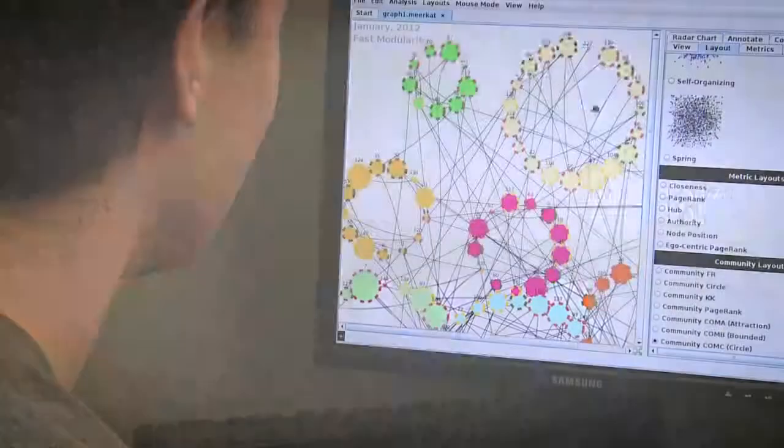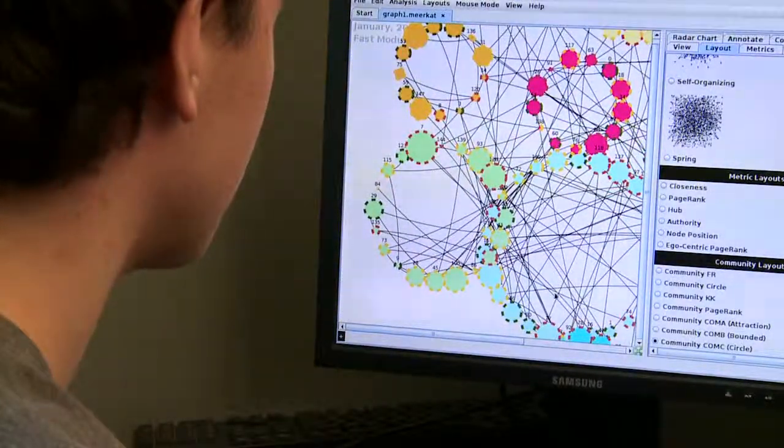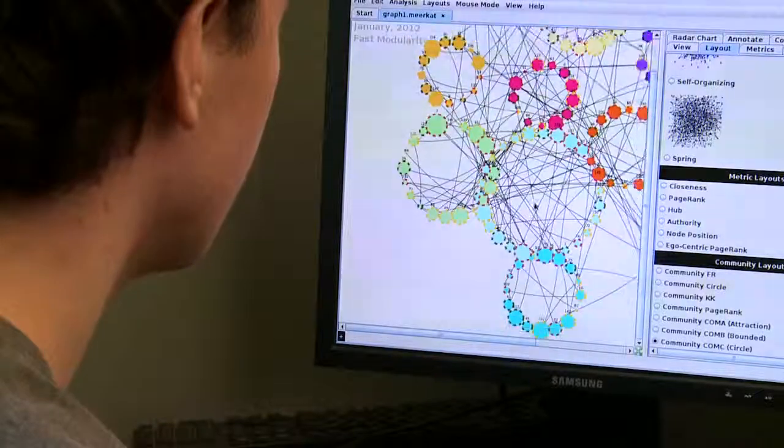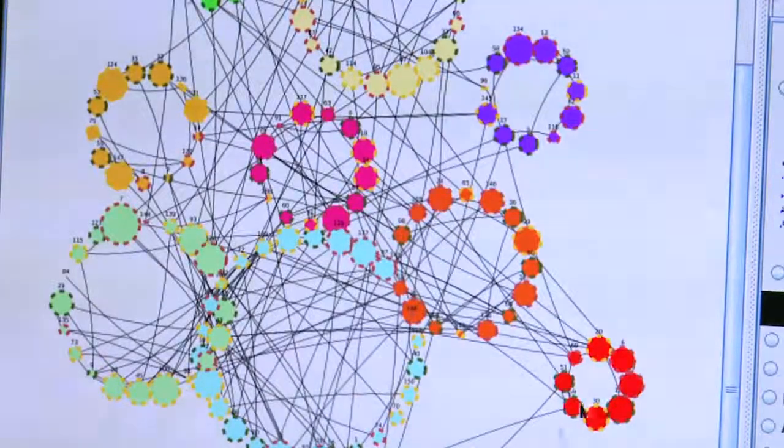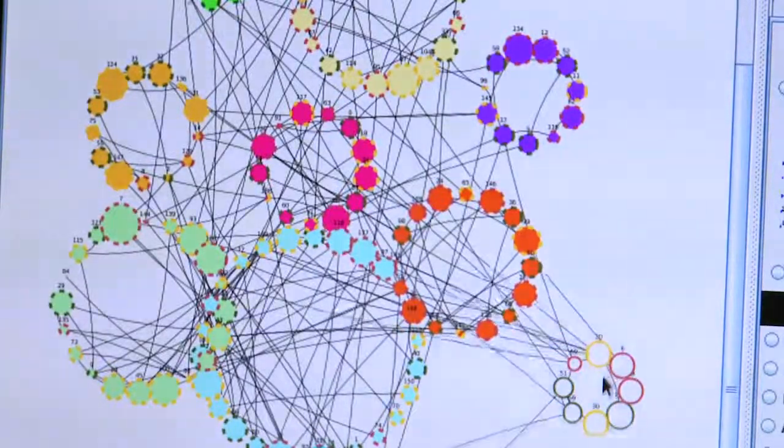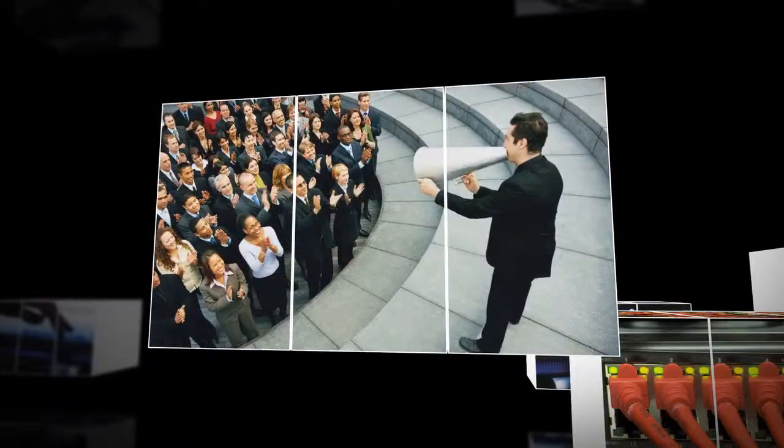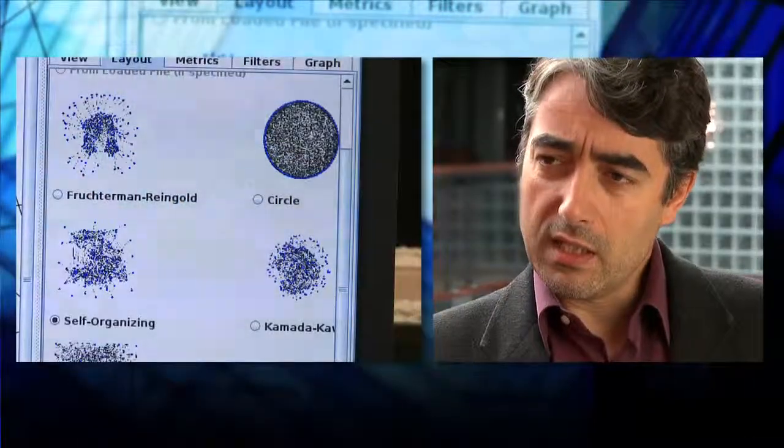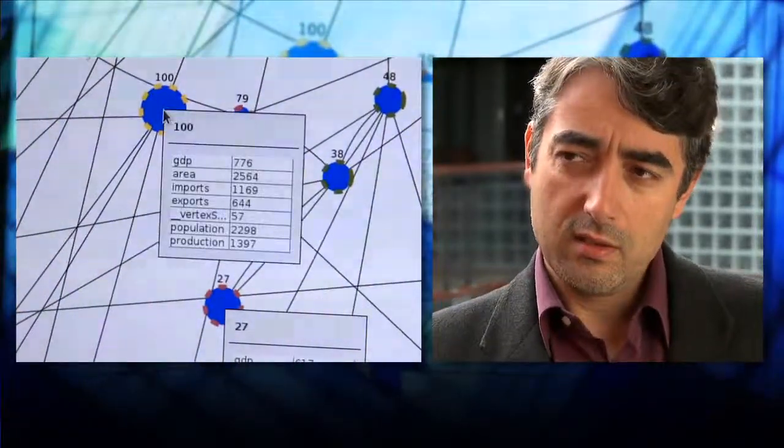Meerkat is a software that allows us to analyze data that contains relationships. We can analyze these relationships and take advantage of that to find patterns that you wouldn't find otherwise. Meerkat helps identify the individuals with the most influence and most impact with others. Meerkat allows businesses to have a different perspective on their data, taking advantage of the existing relationships among records in the database.